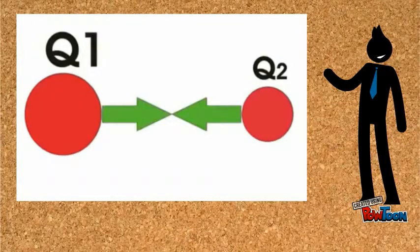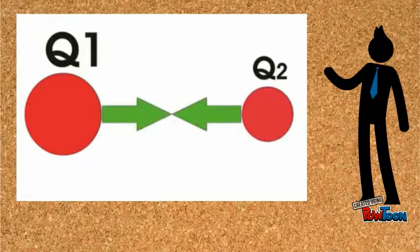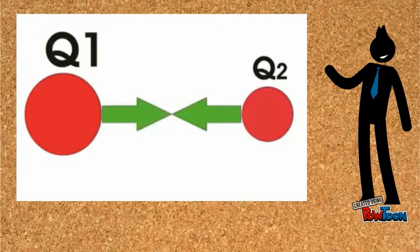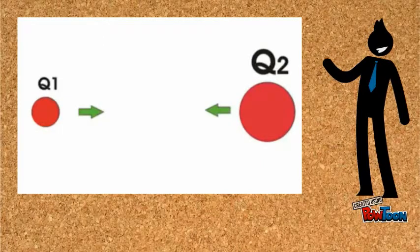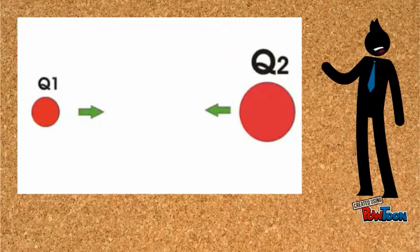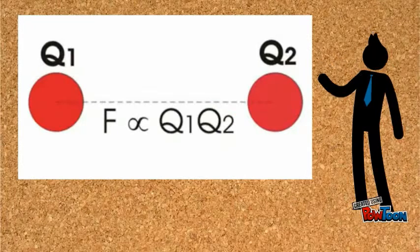Now, if you increase the charge Q1 keeping Q2 unchanged, the force is obviously increased. If you decrease the charge Q1 keeping Q2 unchanged, the force is obviously decreased. According to Coulomb's law, F is proportional to the product of Q1 and Q2.